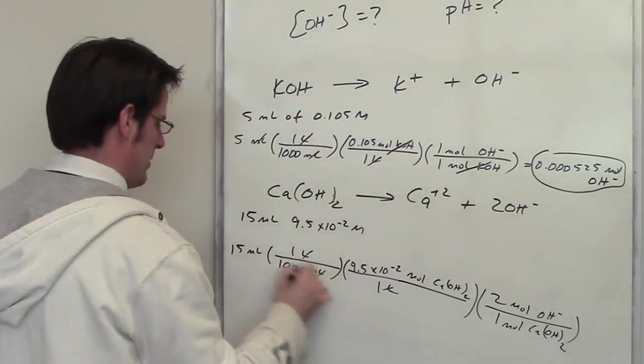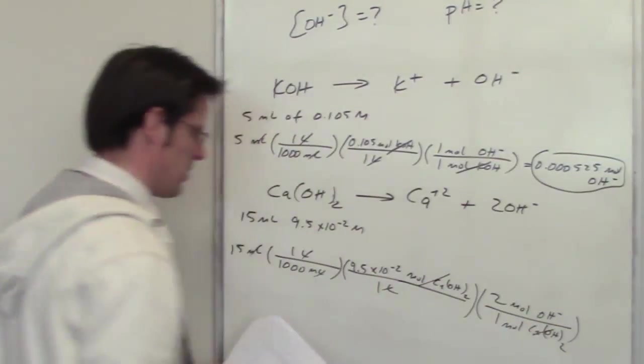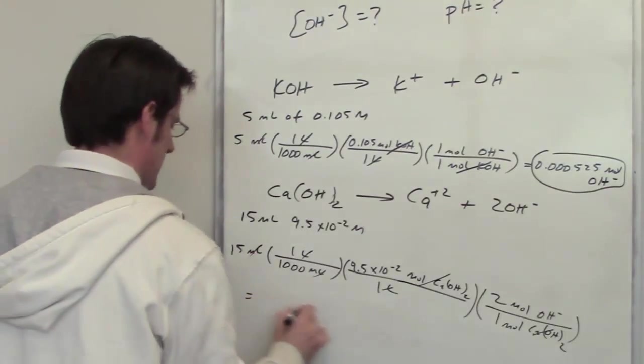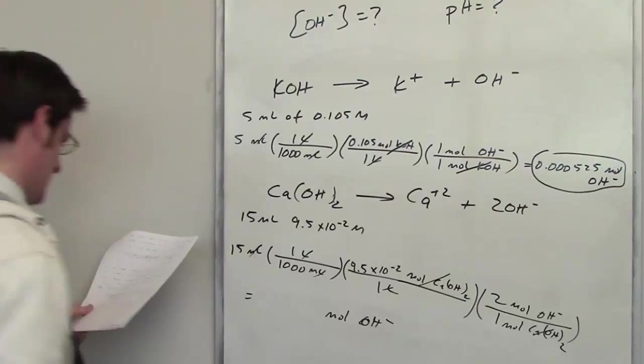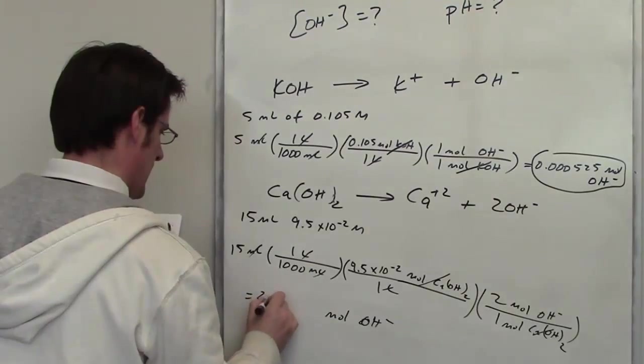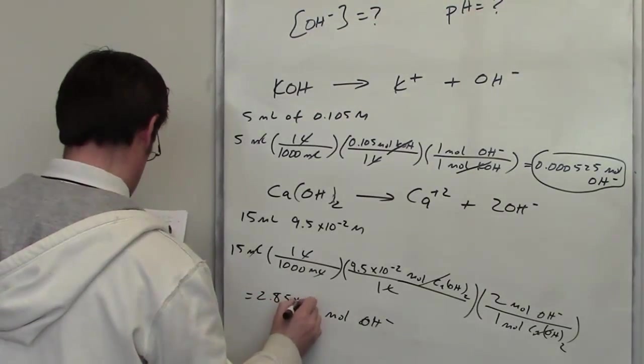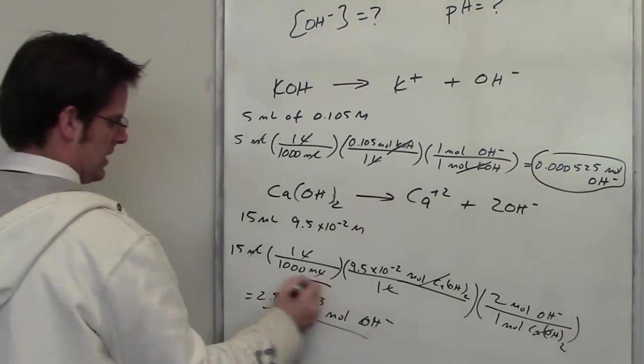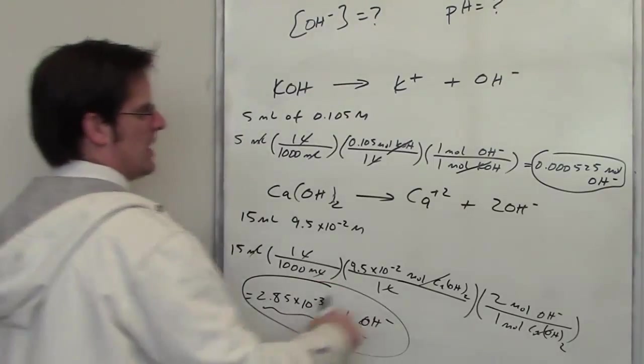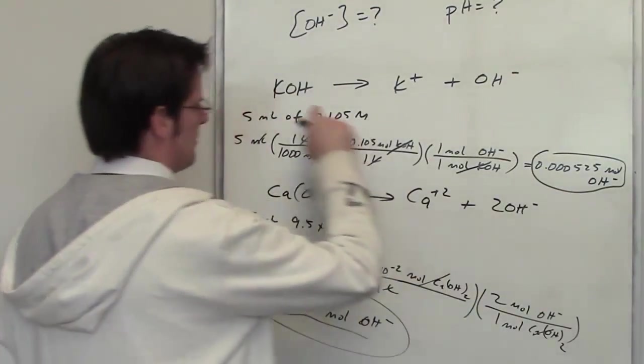The liters cancel each other out, the mils cancel each other out, the moles of calcium hydroxide cancel each other out. I throw that into my calculator and I end up getting the total number of moles of hydroxide from this as being 2.85 times 10 to the negative 3rd. So I have this many moles of hydroxide coming out from my calcium hydroxide. I have that many moles of hydroxide coming out from my KOH.